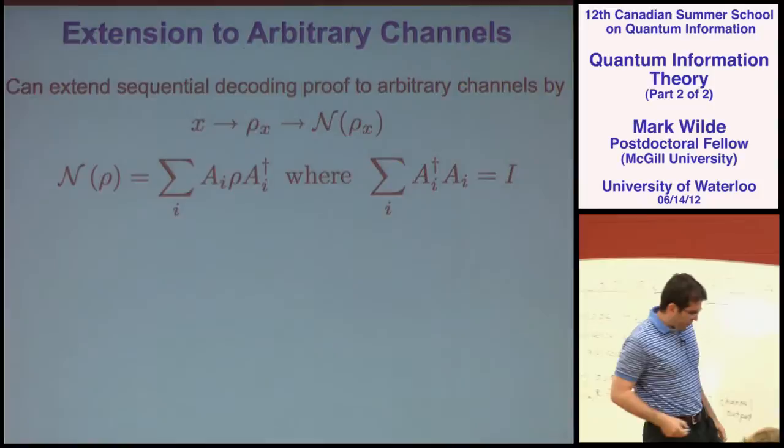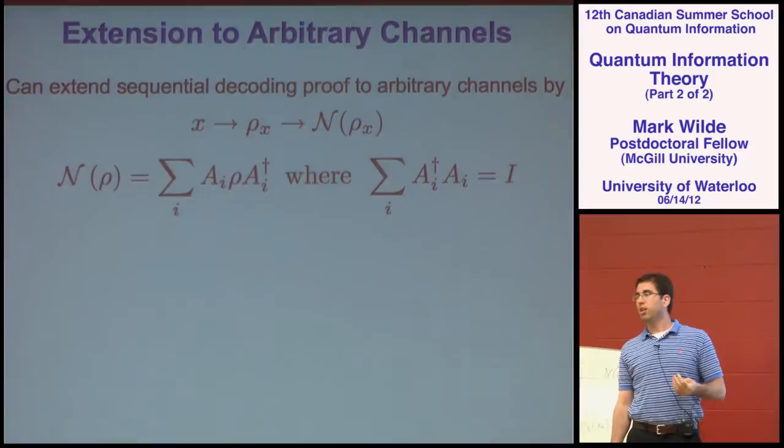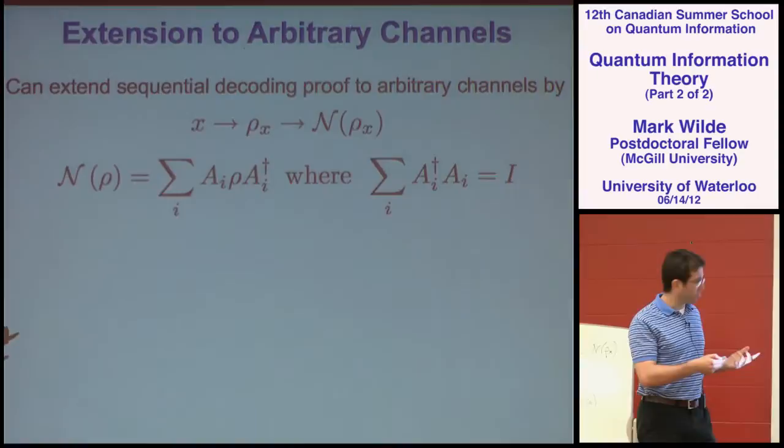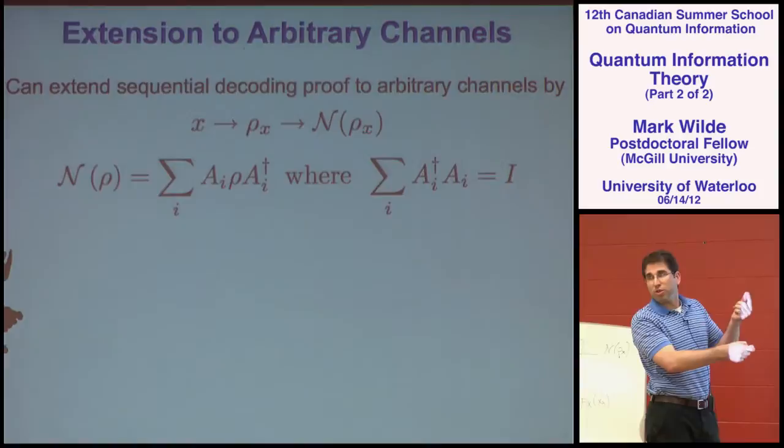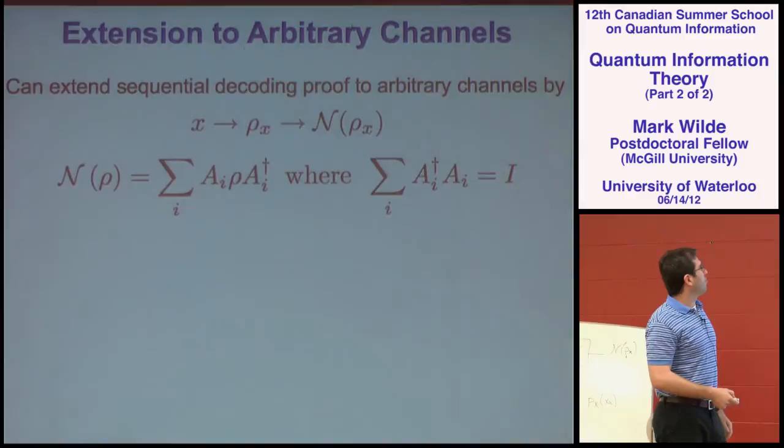Bill Kois talked about completely positive trace-preserving maps. It turns out that if a map is linear, trace-preserving, and completely positive, then there's a representation theorem known as the Kraus representation theorem. Any map that satisfies those properties can be written in a specific form for some Kraus operators A_i such that the sum of their squares is the identity.